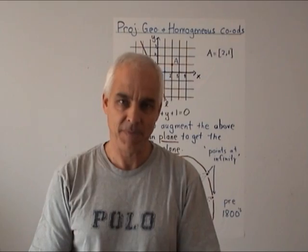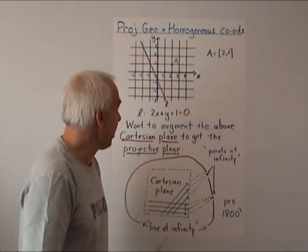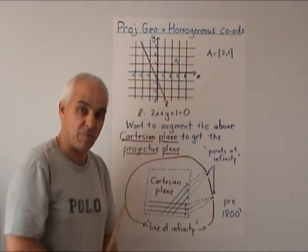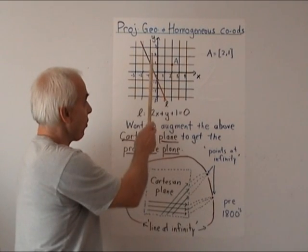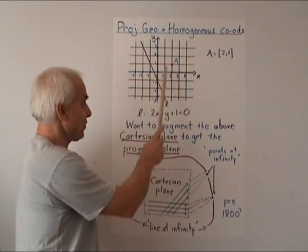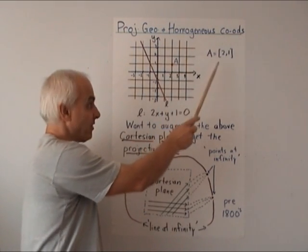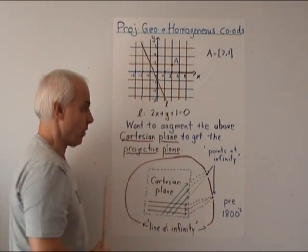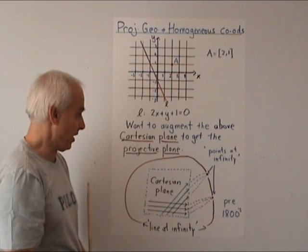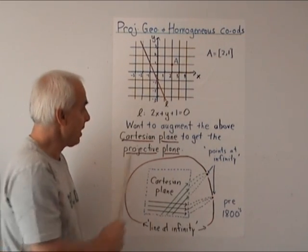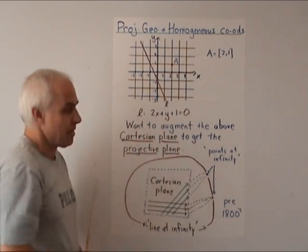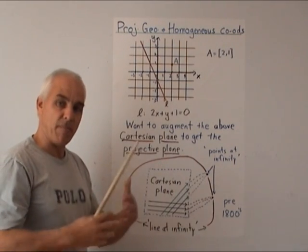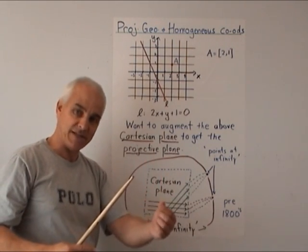Let's start by reminding you about the regular Cartesian plane where we have coordinates x and y. For example, that point there is the point, and this line here has an equation like 2x plus y plus 1 equals 0.